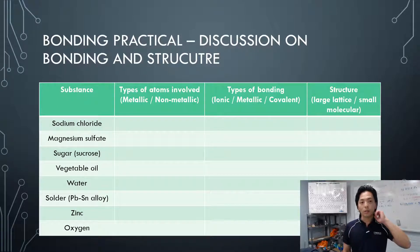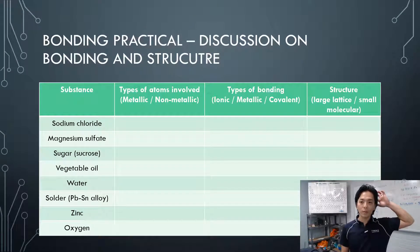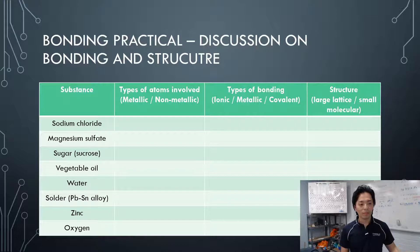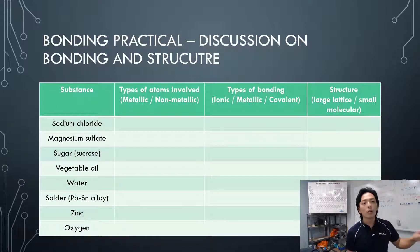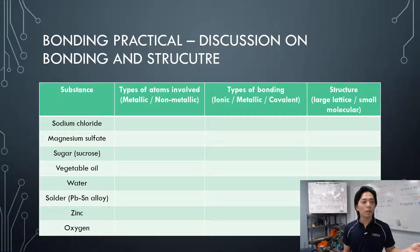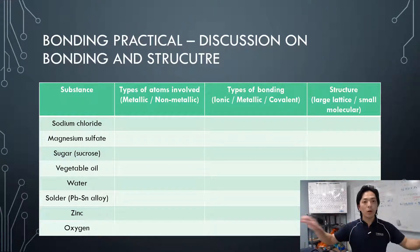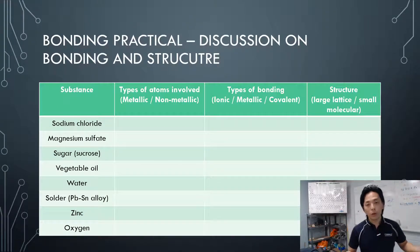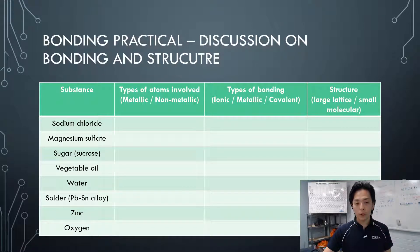Last one: oxygen. The formula of oxygen gas is O₂. The atoms involved are non-metallic, therefore covalent bonding. Structure would be small molecular. Oxygen appears as gas — meaning molecules are far apart from each other. They don't attract enough to make liquid or solid.